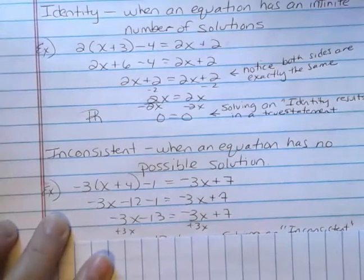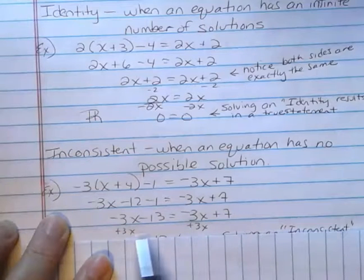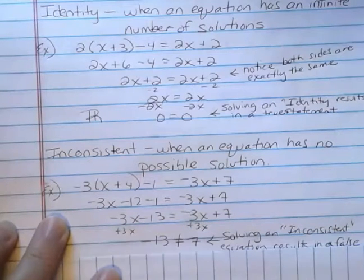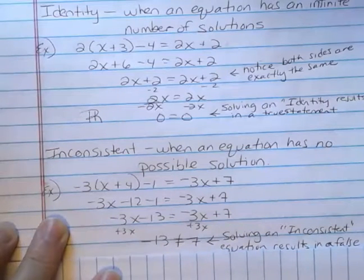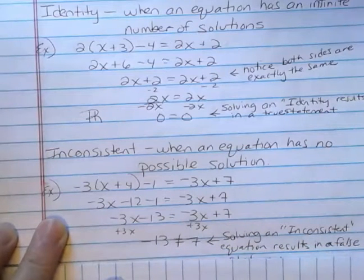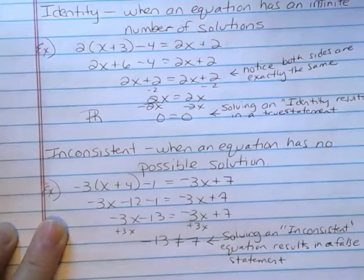And so, what happens is if we were to subtract the 3x off, or add the 3x to both sides to get rid of them, we're left with negative 13 equals positive 7. That's false. It does not. Solving an inconsistent equation results in a false statement. If I went one step further, let's say I added 13 to both sides, I'd have 0 does not equal 20.